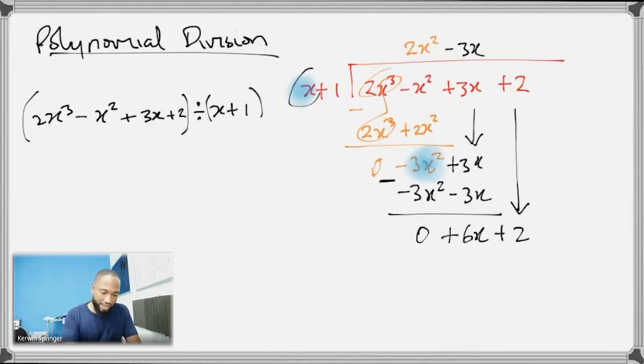3x subtract negative 3x is actually 6x. We're going to bring down this +2. And x into that - speeding it up now - you get +6. And then you say 6 by that is 6x + 6. And you subtract, you end up with -4.